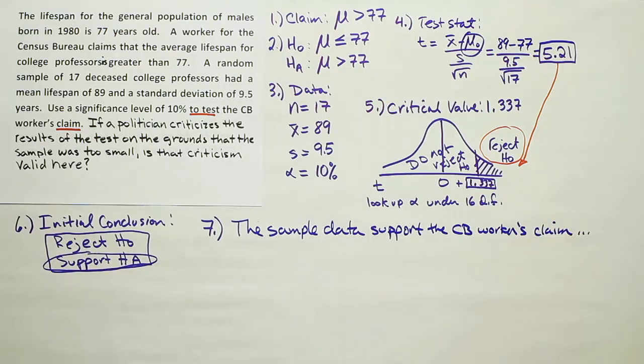The sample data support the Census Bureau worker's claim. What was his claim? His claim was that the average lifetime for college professors is greater than 77 years.